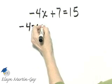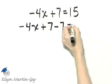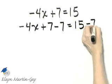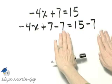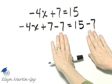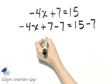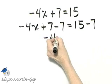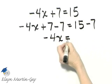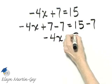Negative 4x plus 7 and then I'll subtract 7, and then 15 I'll subtract 7. This is my original equation but I have subtracted 7 from both sides. The left side simplifies to negative 4x. The right side, 15 minus 7 is 8.